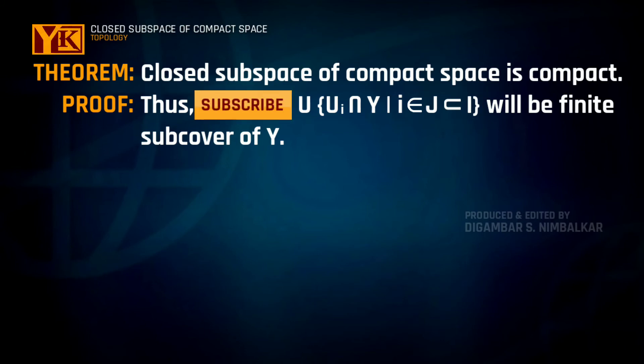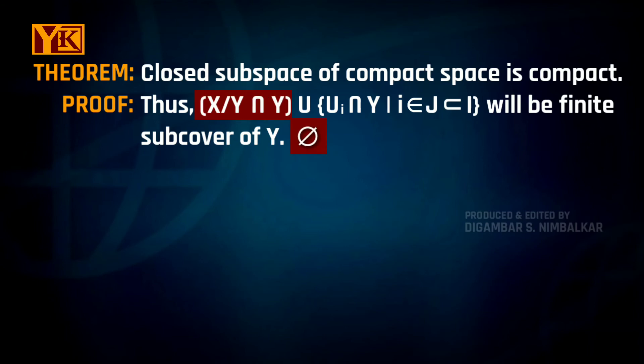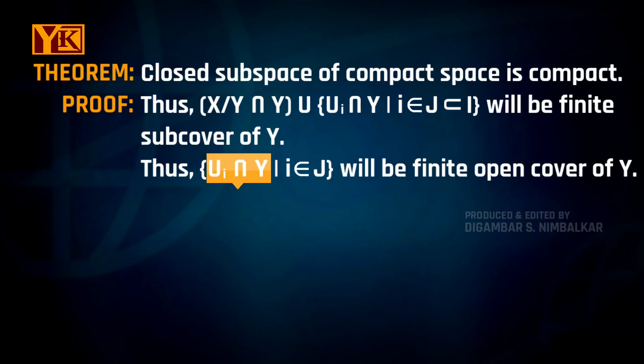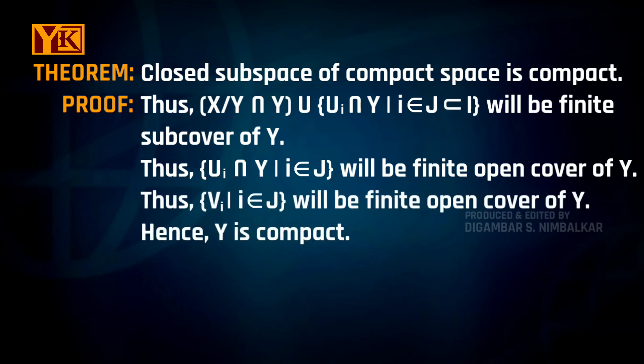If we take the intersection of X minus Y with Y, it equals the empty set. So we have the collection of Ui's intersected with Y, for i belonging to J, as a finite open cover of space Y. But Ui intersection Y equals Vi as assumed, so the collection of Vi's is a finite subcover of Y, and hence Y is compact.